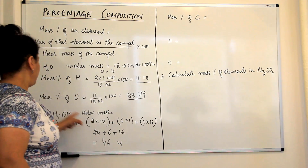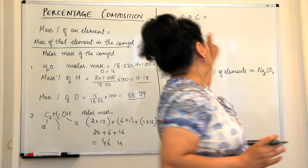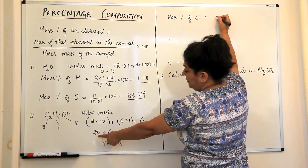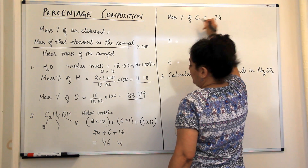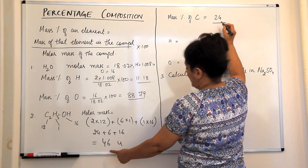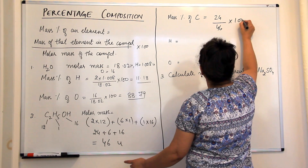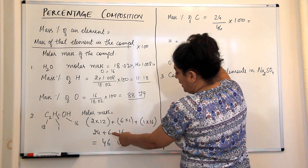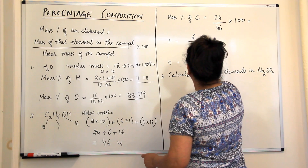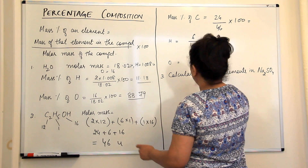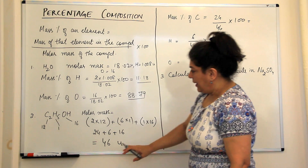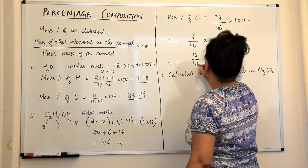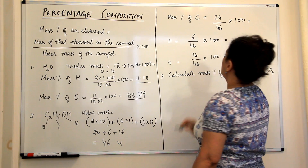Now we find the mass percentage of each element in ethanol (molar mass = 46 u). Mass percentage of carbon: 24 ÷ 46 × 100. Mass percentage of hydrogen: 6 ÷ 46 × 100. Mass percentage of oxygen: 16 ÷ 46 × 100.